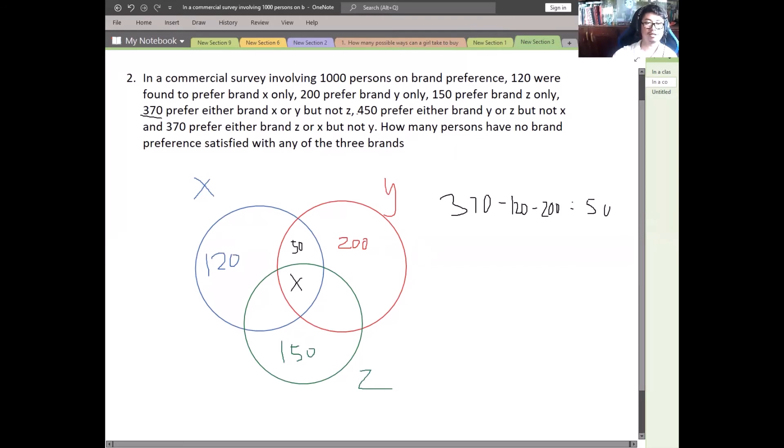Next for the 450. 450 prefer brand Y or Z. So this is between our brand Y and brand Z. So for brand Y, there are 200 minus 150 for brand Z. So 450 minus 200 minus 150, that is 100. So we will write 100 here in the middle of Y and Z circles.